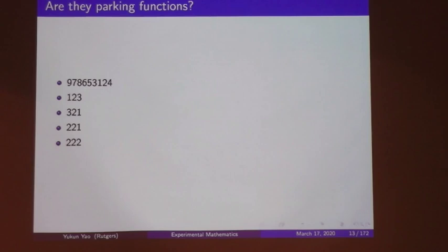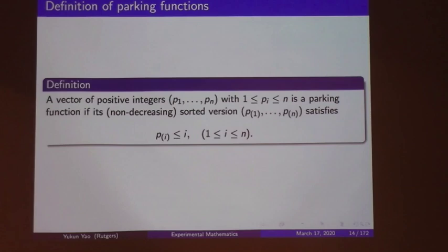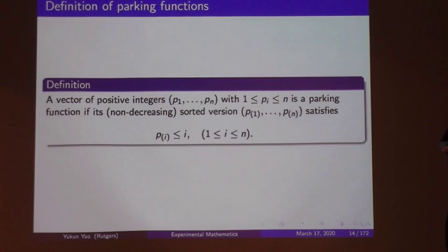Are these preference vectors parking functions? A permutation of 1 to N means each car has a different favorite space, so definitely all cars can park. For (2,1), the first car parks in space 2, second in space 3, last in space 1 — valid. But (2,2,2) is not a parking function because after the first two cars park in spaces 2 and 3, the third car cannot park. Formally, a vector (p_1,...,p_n) with each p_i in {1,...,n} is a parking function if its non-decreasing sorted version satisfies that the i-th element is no more than i.